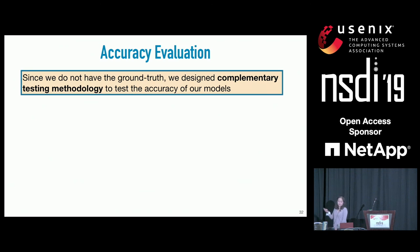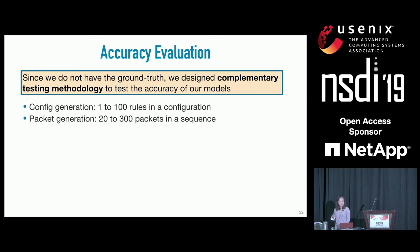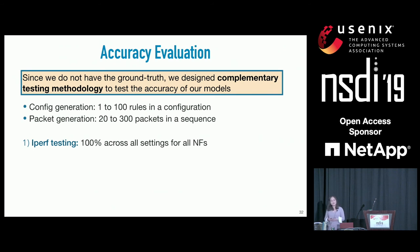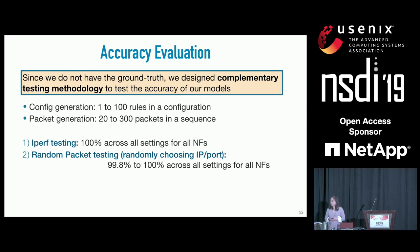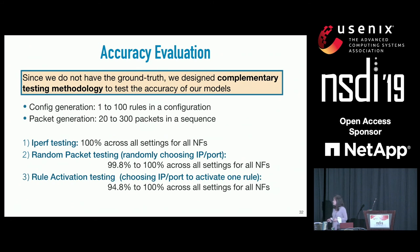For accuracy on real NFs without ground truth, we designed a complementary testing methodology. We generated configurations ranging from 1 to 100 rules and packets ranging from 20 to 300. Accuracy is defined as the percent match between model prediction and the real NF. Using iPerf testing we show 100% accuracy. Random packet testing yields 99.8–100% accuracy. Rule activation testing—choosing IPs and ports to activate one rule—shows 95–100% accuracy; the 95% case comes from a firewall modeled with out-of-window packets having more than 200 states.